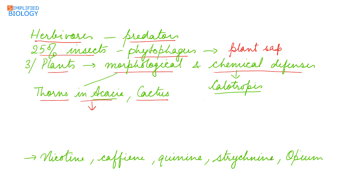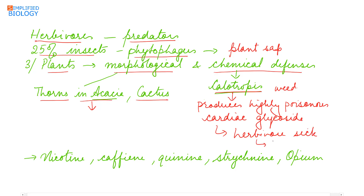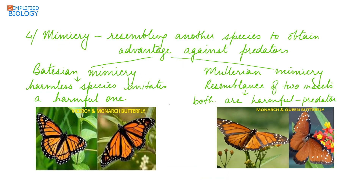Chemical defenses can also be seen in Calotropis, a weed that produces a highly poisonous cardiac glycoside that makes herbivores sick and can even kill them — that is why cattle and goats are never found grazing on Calotropis. Similarly, nicotine, caffeine, quinine, strychnine, and opium are all chemical defenses developed in plants against predators.